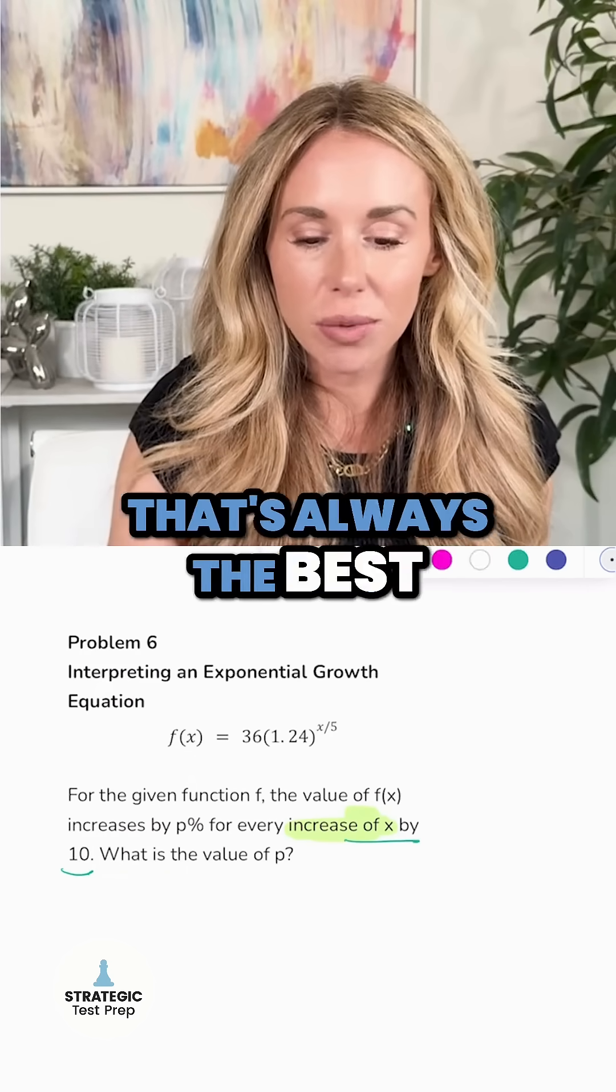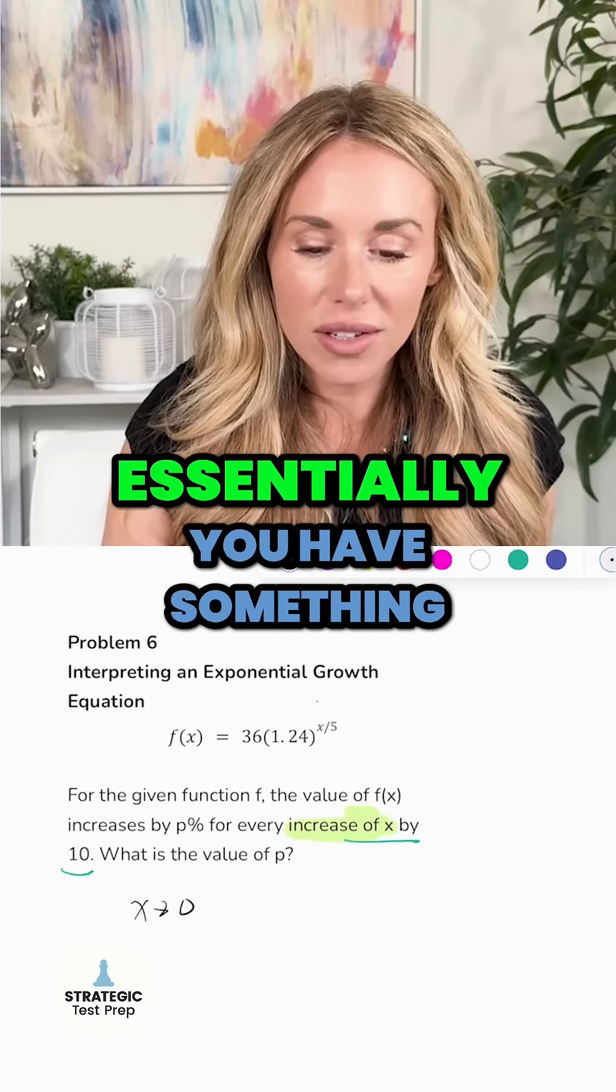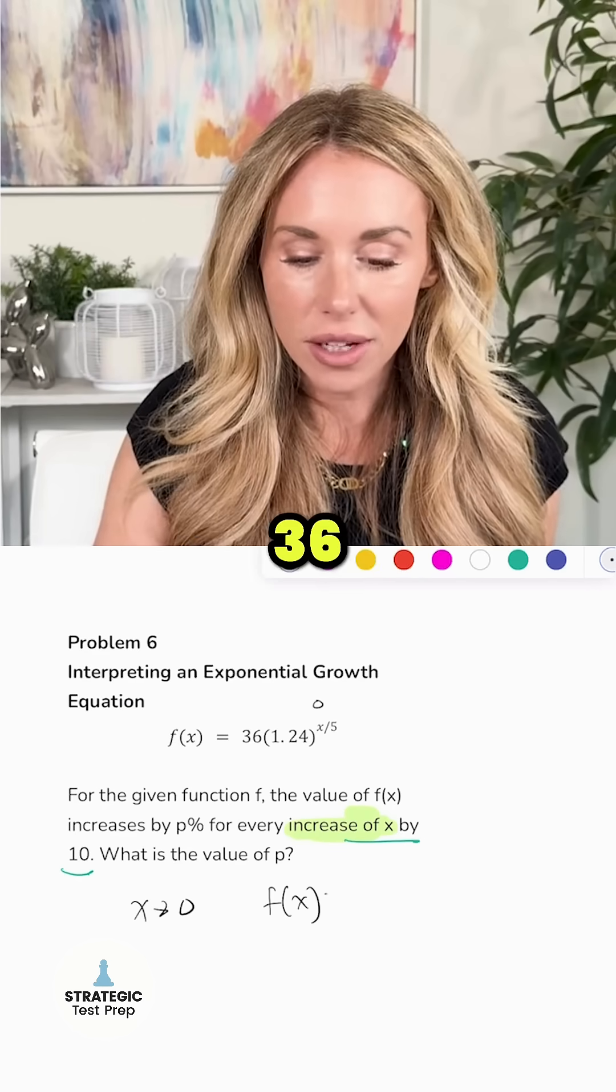If we made x zero, that's always the best way to start. So when x is zero, essentially you have something to the zero power equals one, you're going to get 36, because it's going to be 36 times 1.